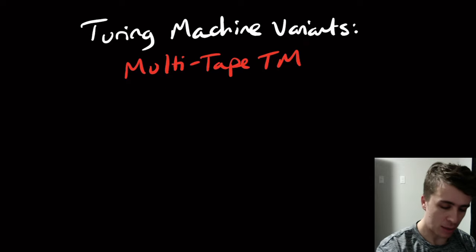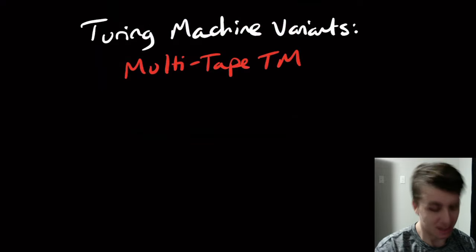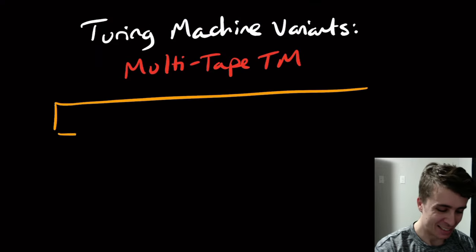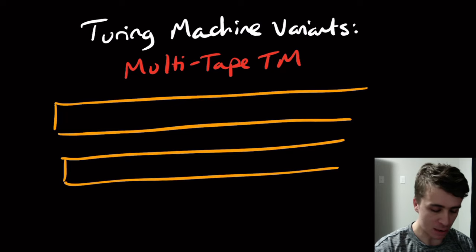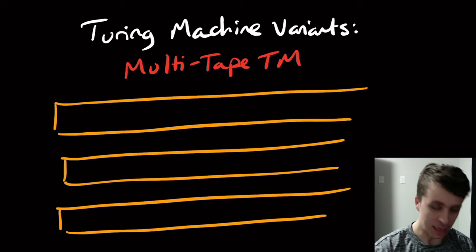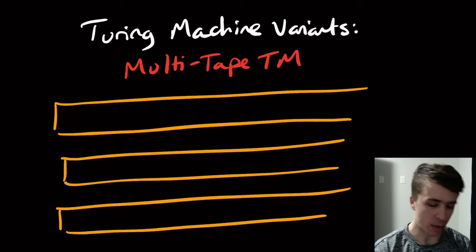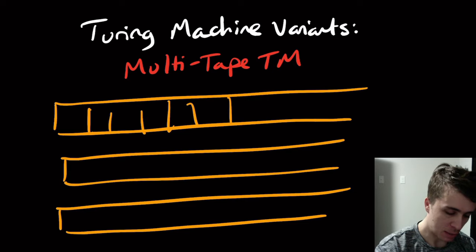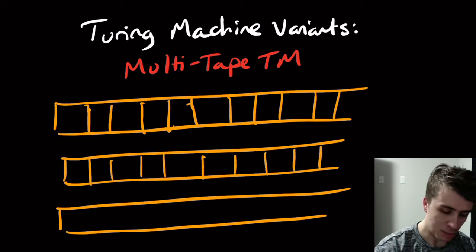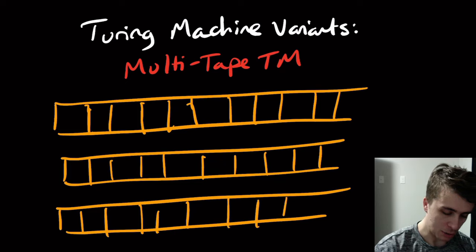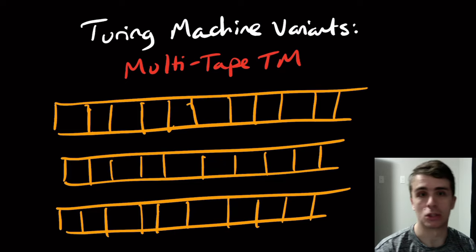In this model we have multiple tapes — instead of just one tape, let's say we have three right here. Three one-way infinite tapes, each with a bunch of cells. I failed art, so I'm going to use my art skills to showcase to thousands of people how to make Turing machines.